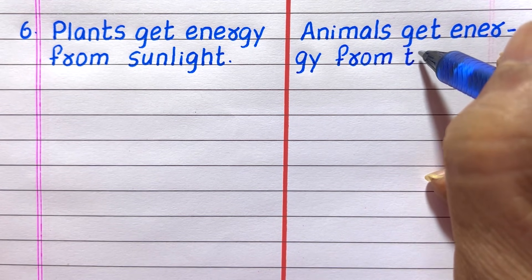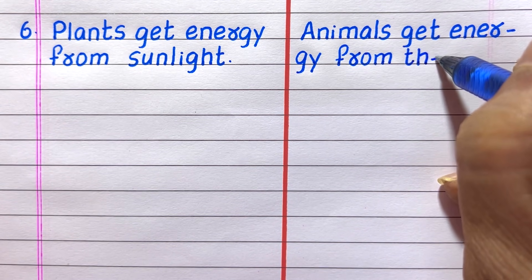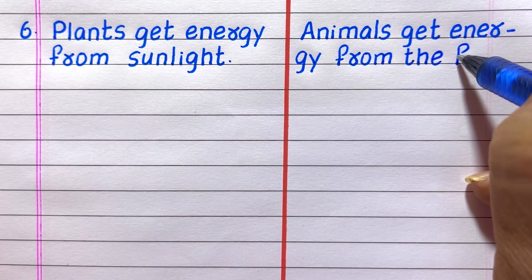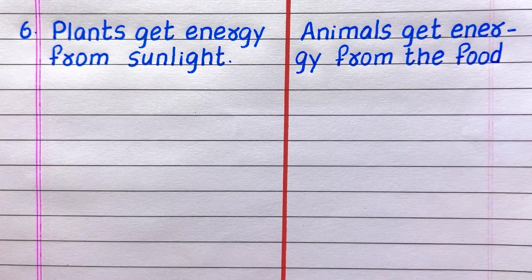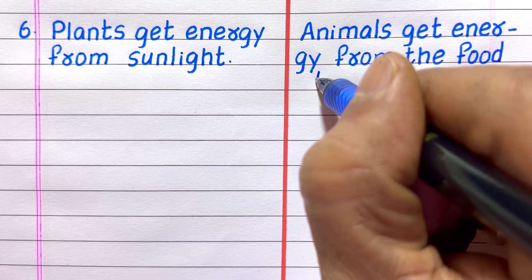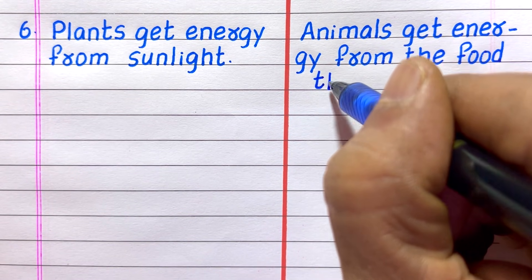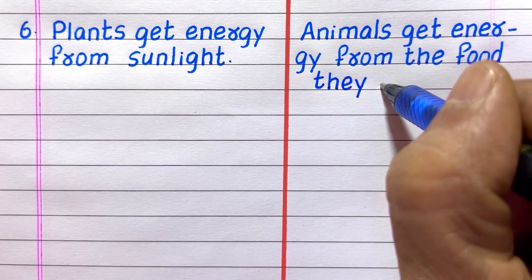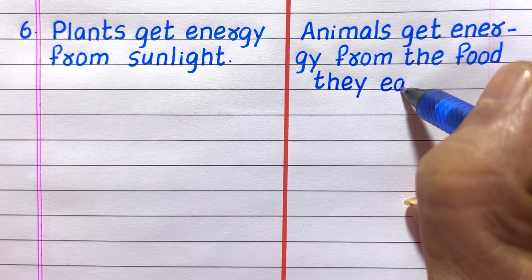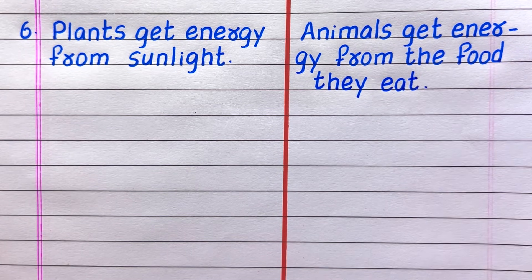Sixth difference between plants and animals: plants get energy from sunlight, while animals get energy from the food they eat.